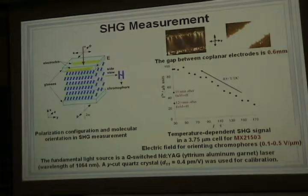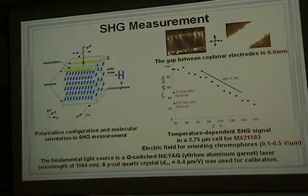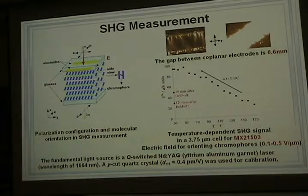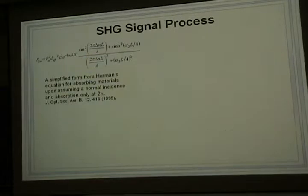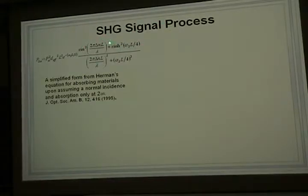The electric field used for orienting the chromophore is only 0.1 to 0.5 volts per micron. In contrast, for poled polymer systems, people always use 10 to 50 volts per micron to align the chromophore. Now we will show how to process the data.